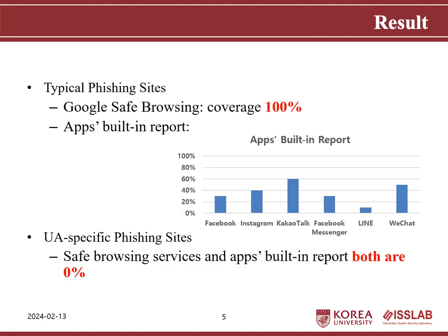Here is a short result of our evaluation — please see the detail of each app's response to the two attack scenarios in our paper. For typical phishing sites, Google Safe Browsing blocked all websites within an hour, and in-app built-in report only blocks part of them. However, for UA-specific phishing sites, after our reports, none of the antiphishing entities blocked our WebView-targeting phishing attacks.